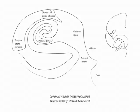Now, starting from the tip of the superior turn, label CA4, then CA3, then CA2, and finally CA1. CA1 is particularly susceptible to anoxia. Next label the horizontal stretch as the subiculum, and finally the inferior turn as the entorhinal cortex.